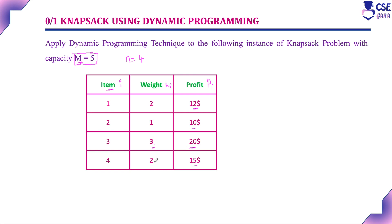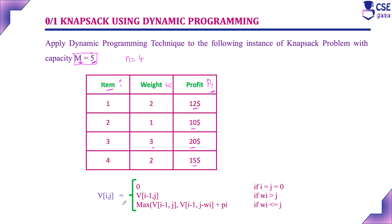Our objective is to select a combination of objects to place into the knapsack such that it does not exceed the maximum capacity and also maximizes the profit earned. To implement the knapsack problem using dynamic programming, we use this recurrence relation: V(i, j) = 0 when i or j is 0; V(i−1, j) when the weight of the object exceeds j; and maximum of V(i−1, j) and V(i−1, j−w_i) + p_i when weight is less than or equal to j.